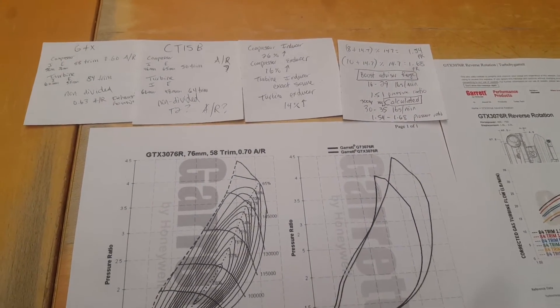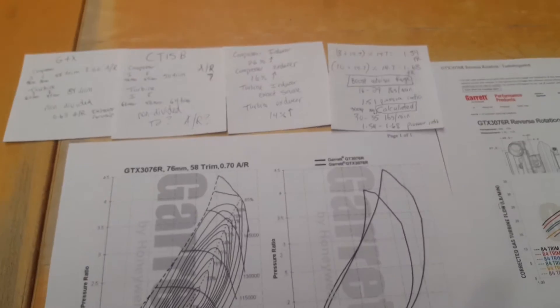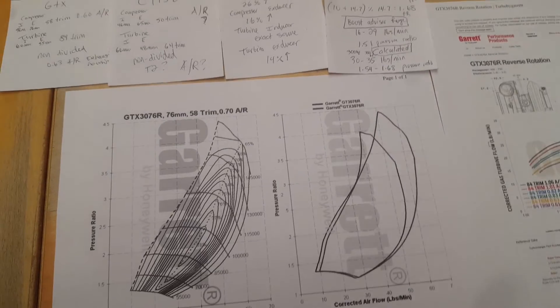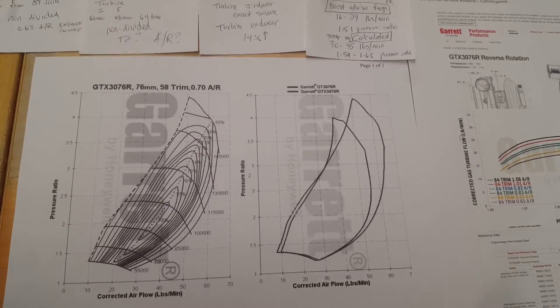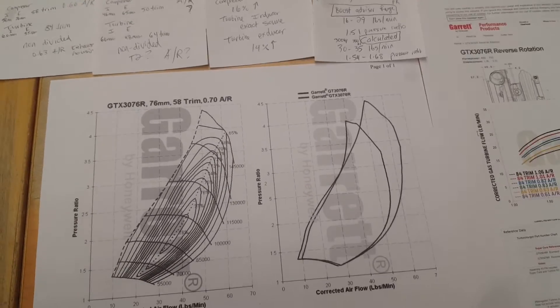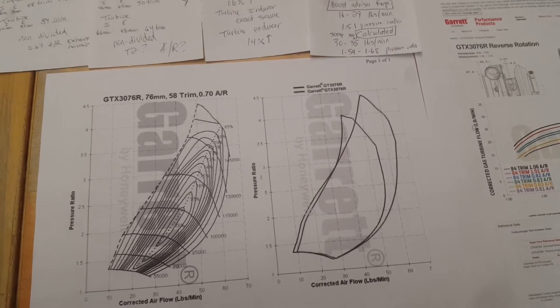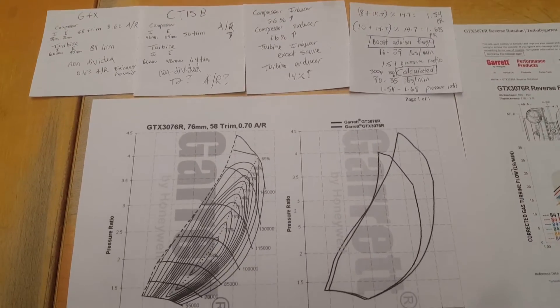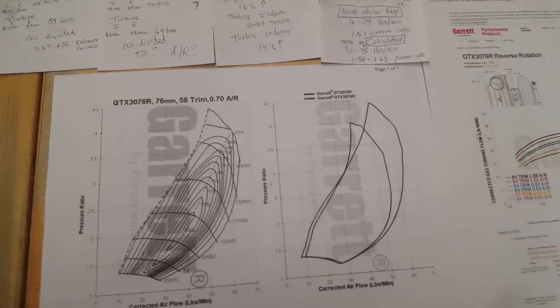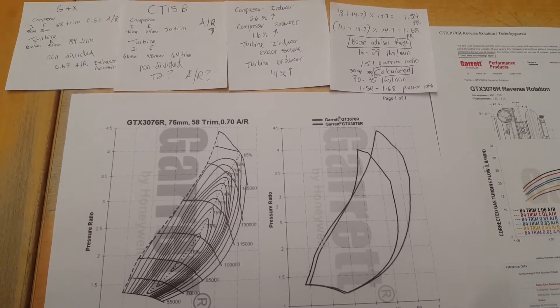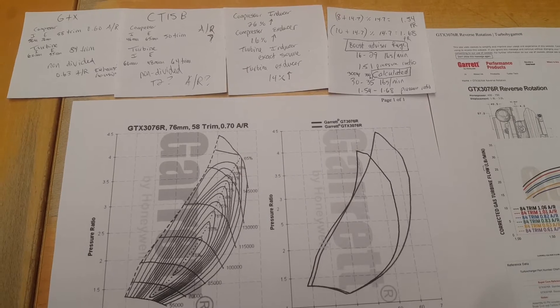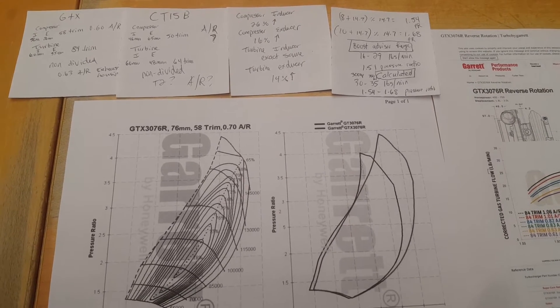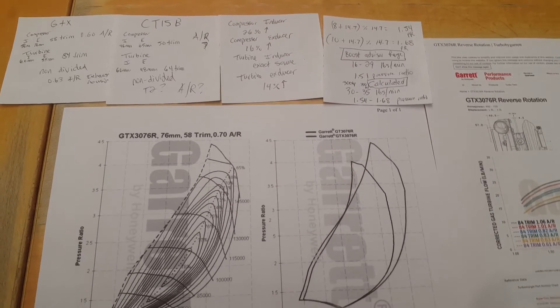Because I just feel like the CT15B, the stock turbo, is just not enough. To me, it chokes out up top. That's just my personal opinion. Some people say they're fine if you run 18 pounds on the stock turbo. But me personally, I kind of play everything safe. And the factory CT15B exhaust wheel is made out of ceramic. So that does not like a lot of vibration and harshness per se. It just explodes.